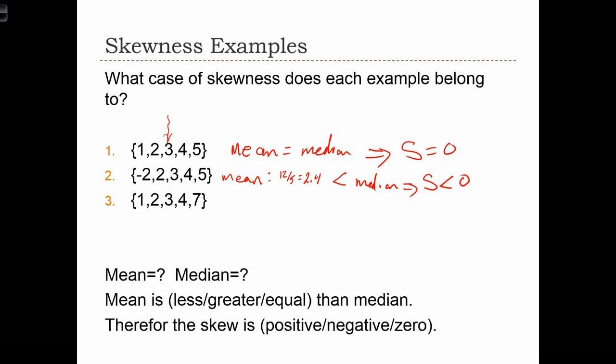Now let's look at the last case. Here the mean is equal to 17 over 5, which is equal to 3.4, which is greater than the median. The median, again, the middle value, is still equal to 3, and this implies that the skewness is going to be positive.